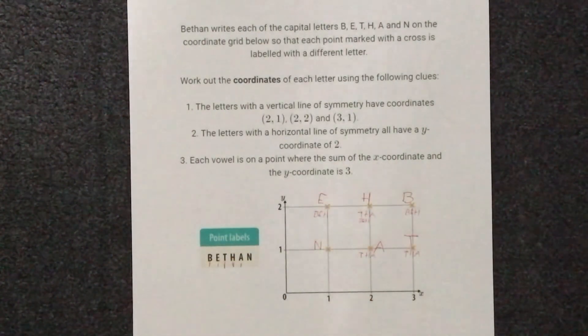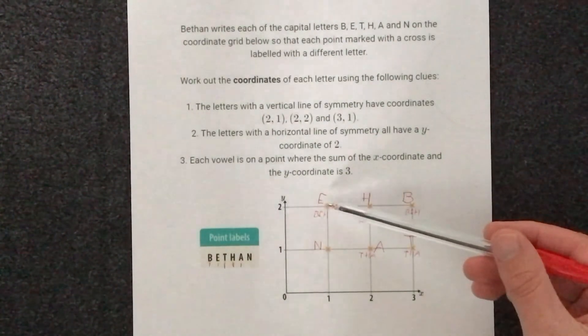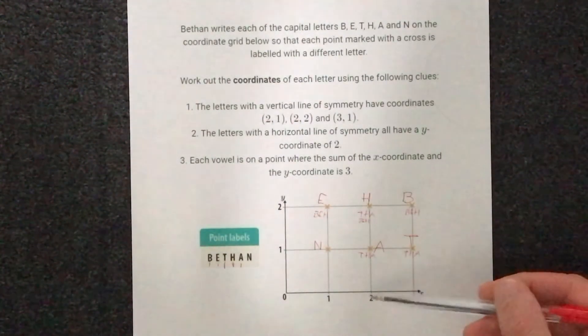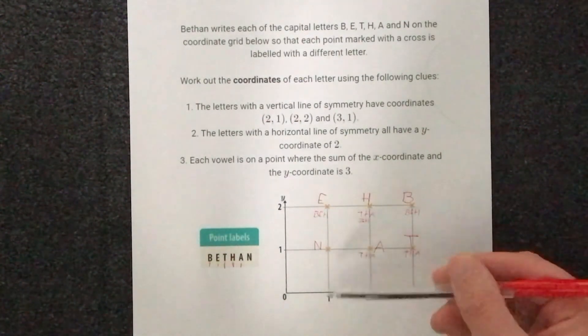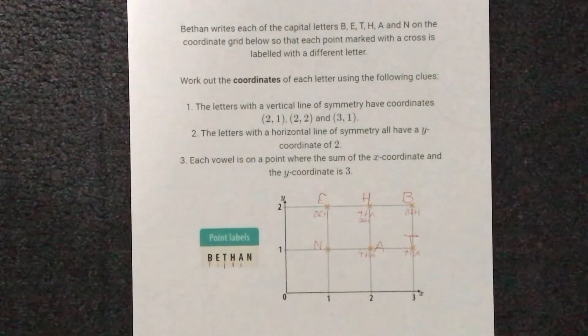So our letters: B is at (3,2), E is at (1,2), T is at (3,1), H is at (2,2), A is at (2,1), and N is at (1,1). And that's how we solve the Bethan question on Sparks.